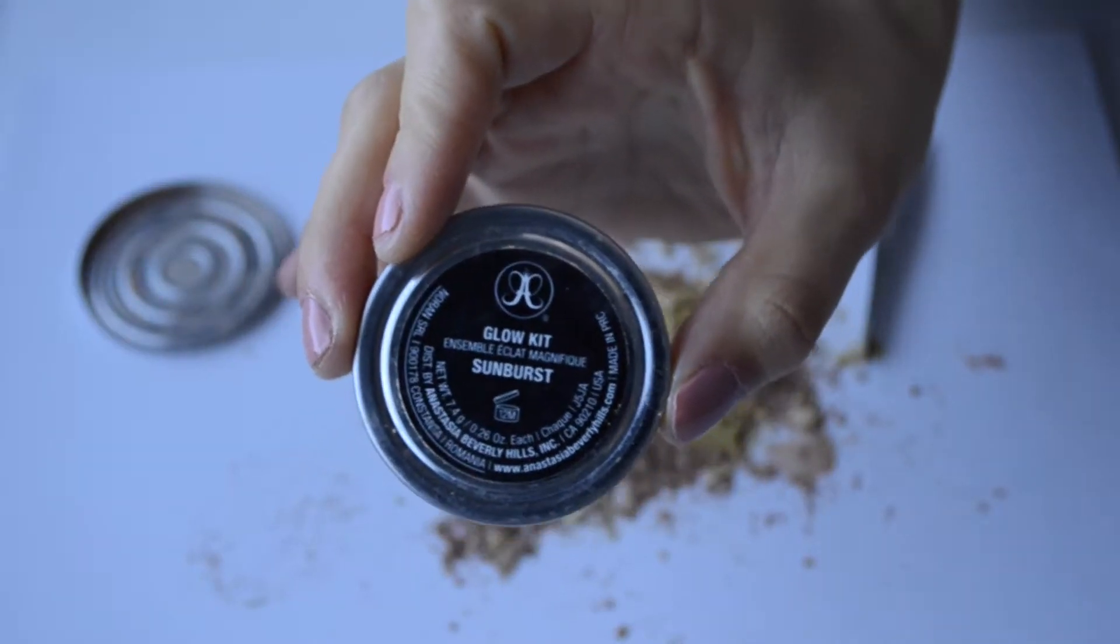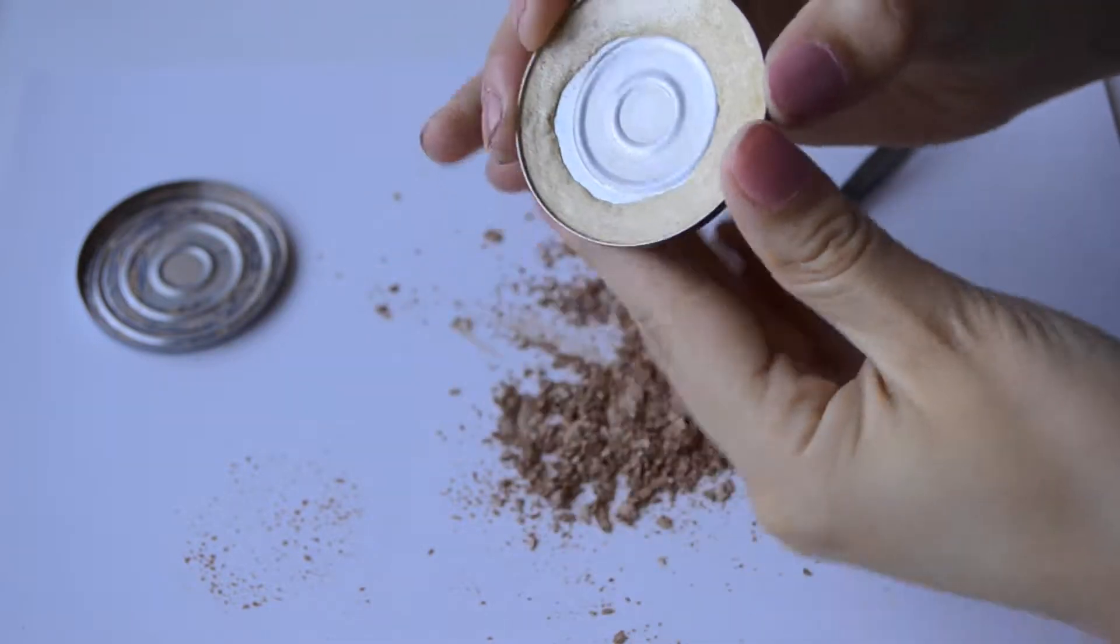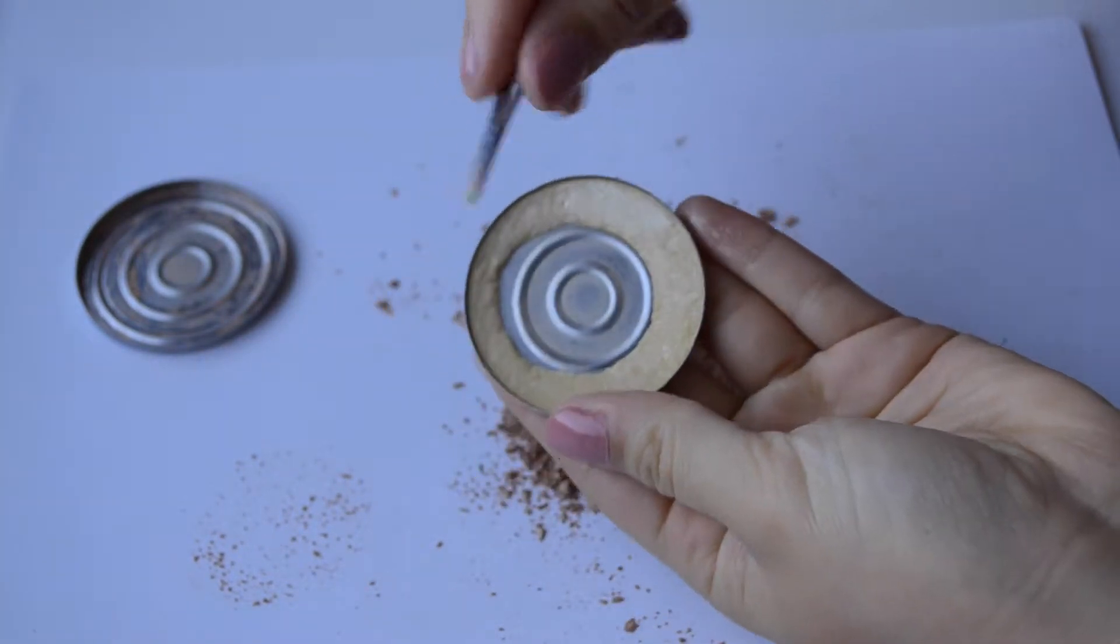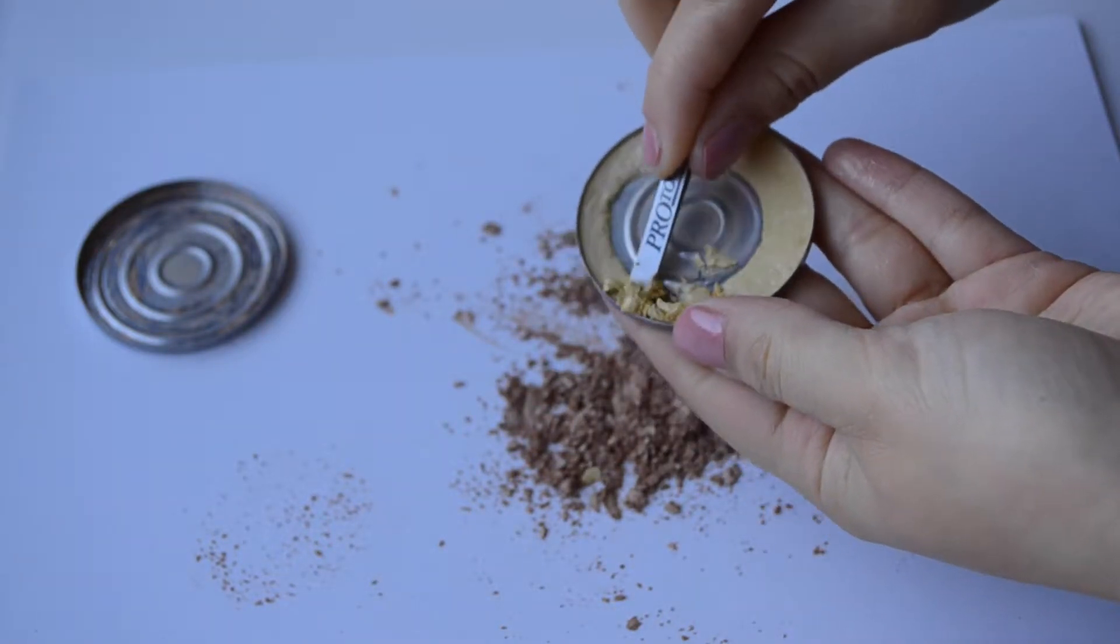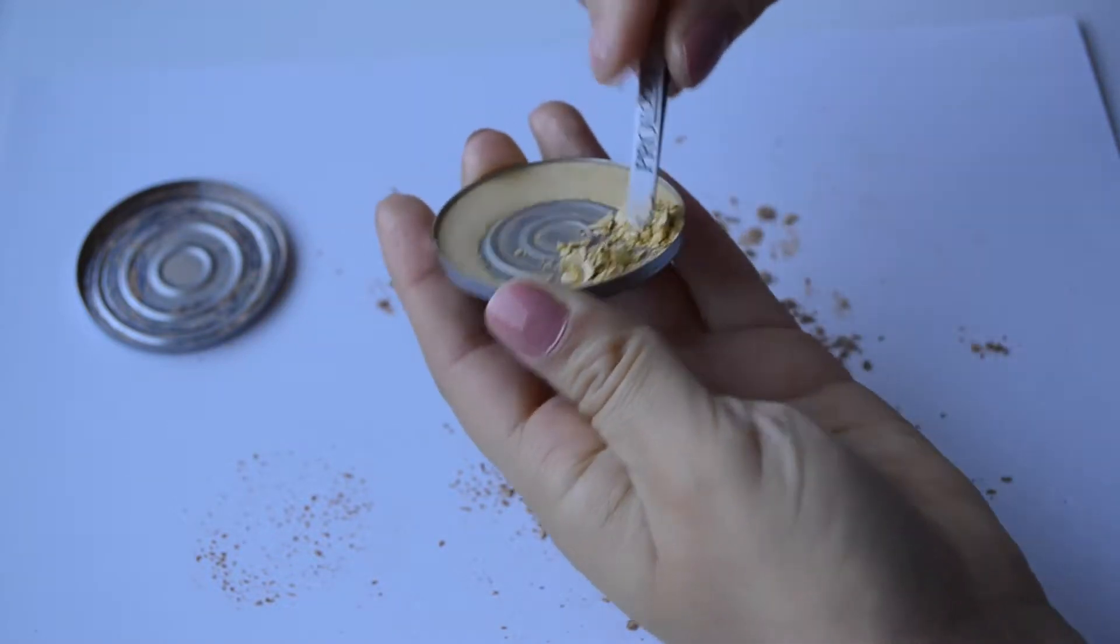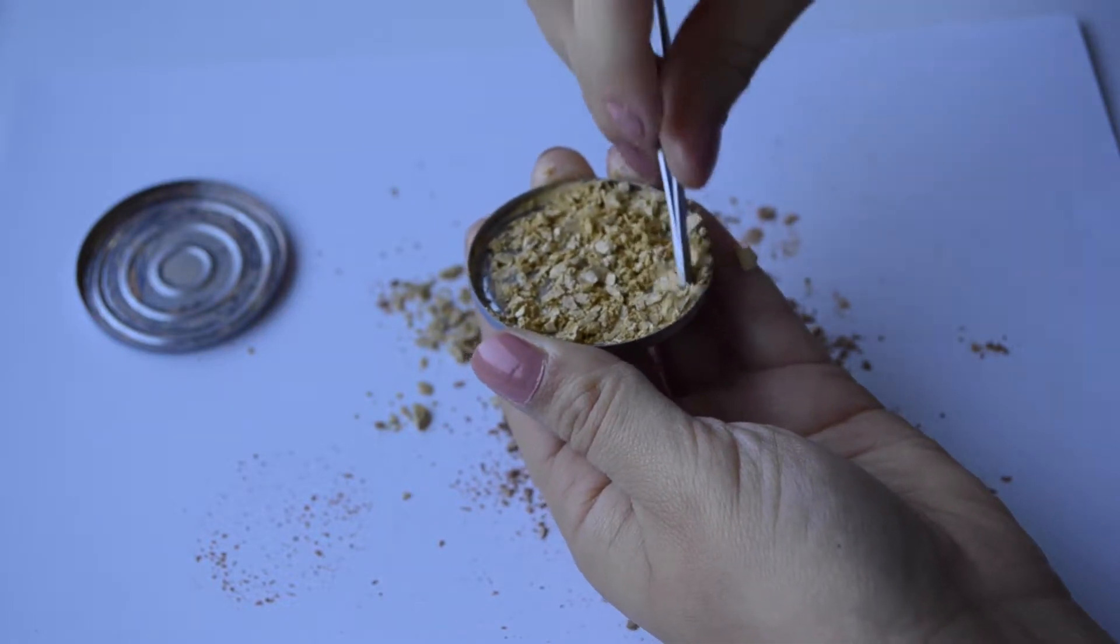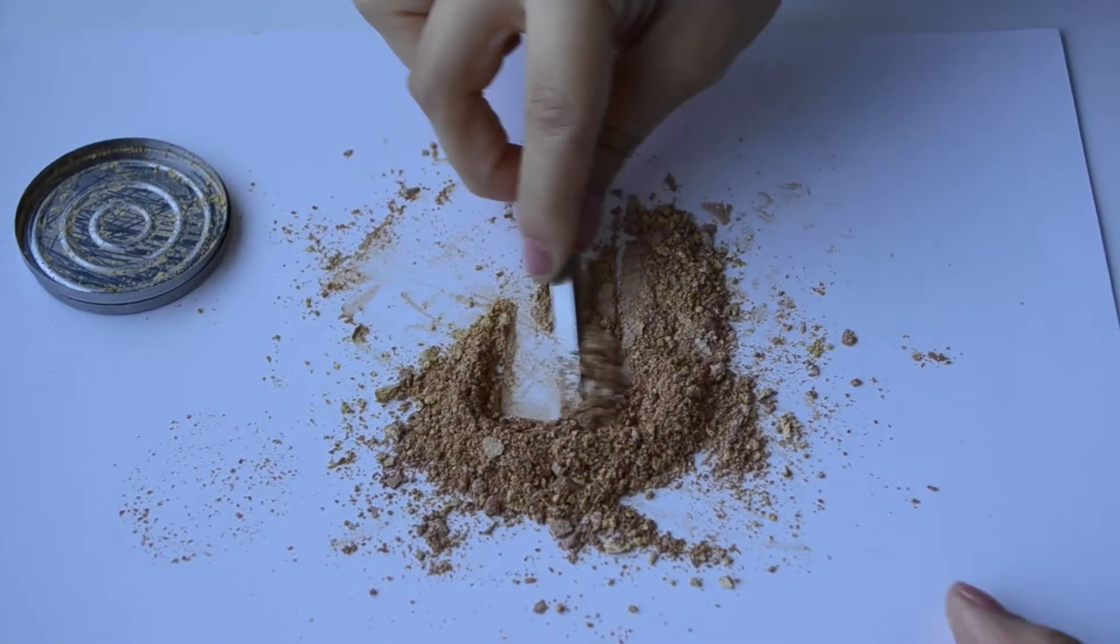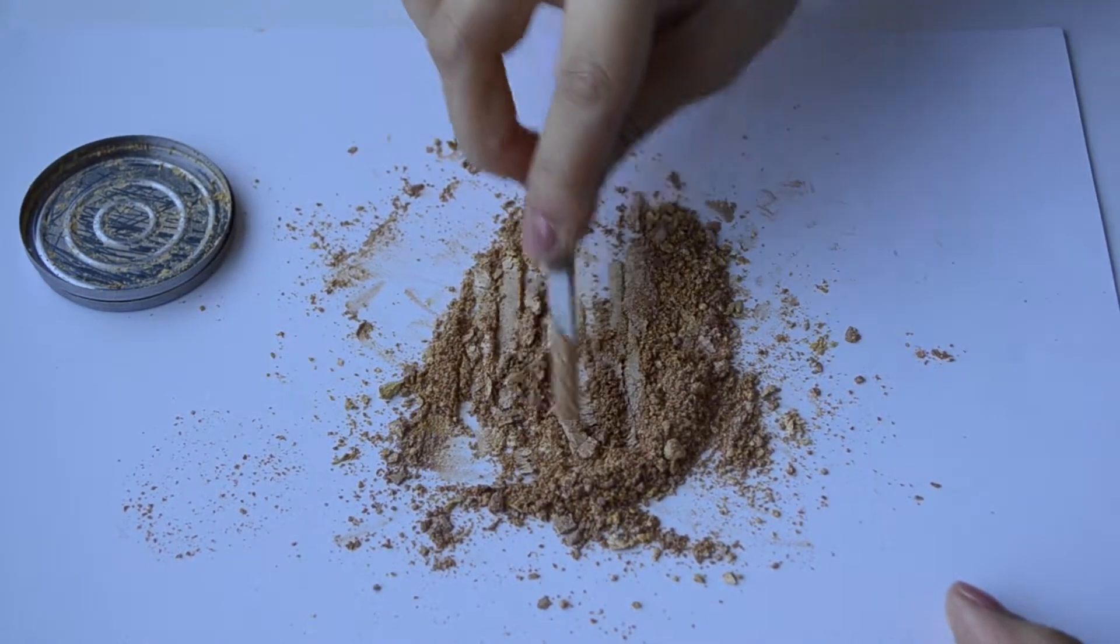The two shades I decided to mix was Sunburst and Bubbly. And since I'm going to be mixing both of the shades, I'm repeating the same step and dumping it onto the Bubbly shade. I'm going to be raking up the product with the tweezers to try to get it as finely milled as I can.